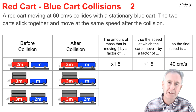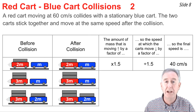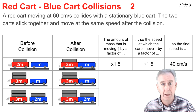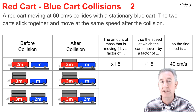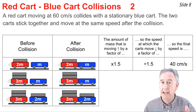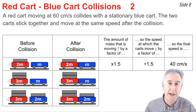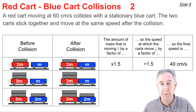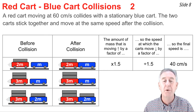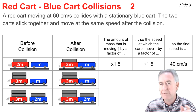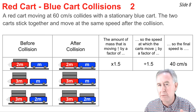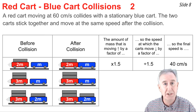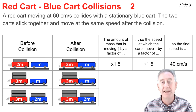When a cart of mass 2m hits a cart of mass m, you end up with 2m plus m moving — that's 3m. So the final mass is 3m and the initial was 2m, giving a multiplying factor of 3 divided by 2, or 1.5. Using 1.5 as the dividing factor on speed: 60 divided by 1.5 gives 40 cm/s.